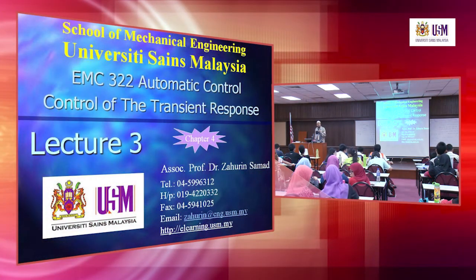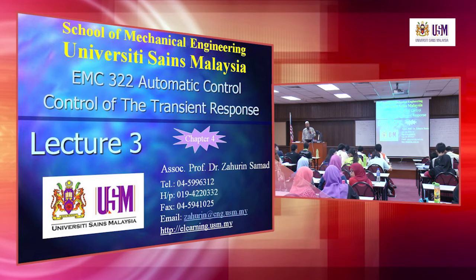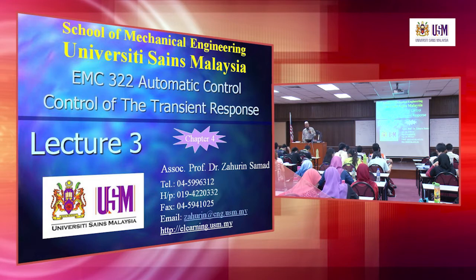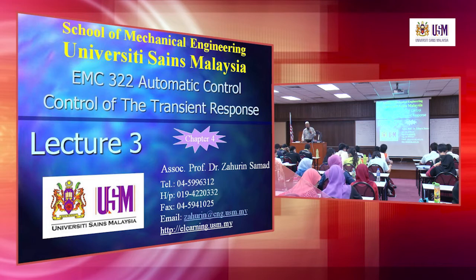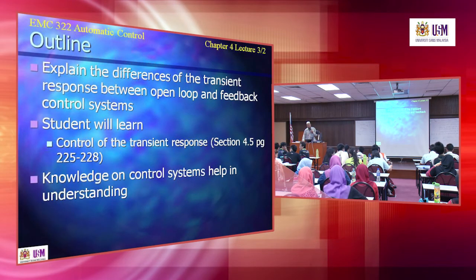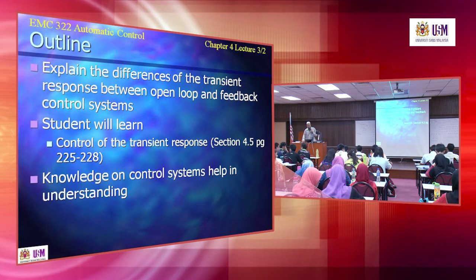We have now looked at two advantages of the feedback control system. First, sensitivity: we proved the closed loop control system is less sensitive than the open loop. Second, disturbance: the closed loop system is less affected than the open loop. Now this is the third advantage of feedback control system: the transient response, covered in section 4.5 of your textbook.